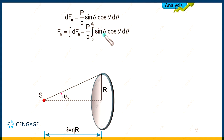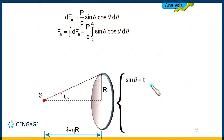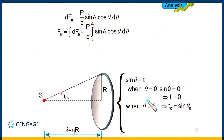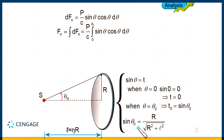We use the substitution sinθ = t. Setting the limits: when θ = 0, t = 0; when θ = θ₀, t = t₀ = sinθ₀. From the triangle, sinθ₀ = R / √(l² + R²) = 1 / √(1 + η²), since l = η·R. Differentiating: cosθ · dθ = dt. Substituting, the integral becomes (P/c) · ∫₀^t₀ t · dt.